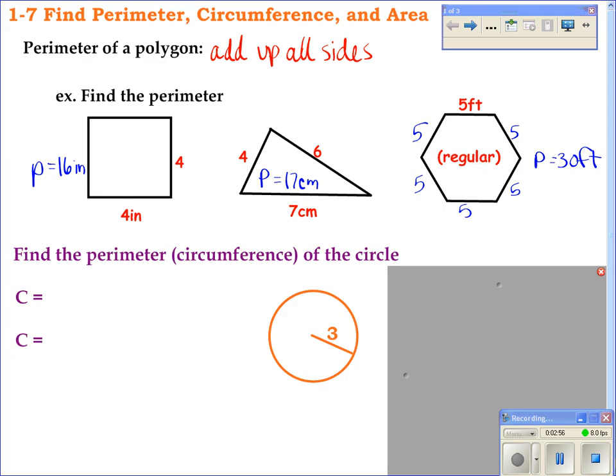So pi times diameter is one of them. The other one is 2 pi r. Somebody tell me why those are exactly the same thing. Yes. If you take the radius, which is just halfway across the circle and times it by two, that's the exact same thing as the diameter. So you can use either one interchangeably, whatever one you feel comfortable with. I tend to just use whatever one that goes along with whatever they've given to me. So this one, they're talking about the radius, so I'm going to use the one that has the radius in it.